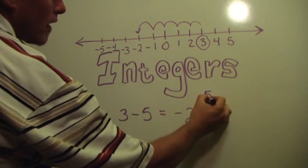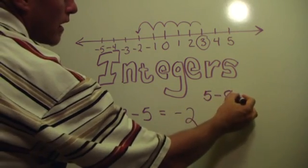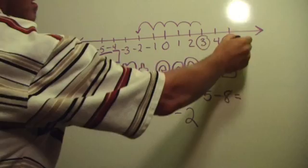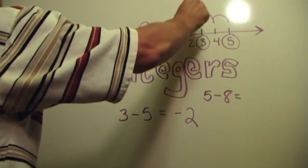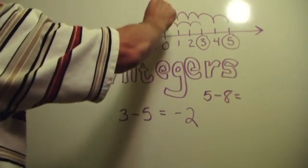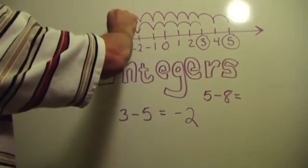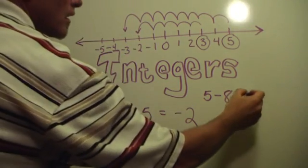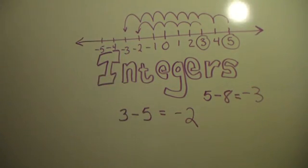Another example. Five minus eight. Start at the five. Move one, two, three, four, five, six, seven, eight spaces to the left. Take away eight. End up at negative three.